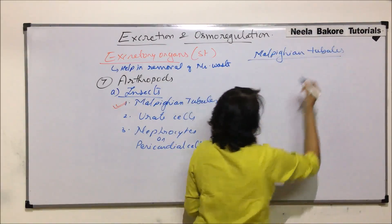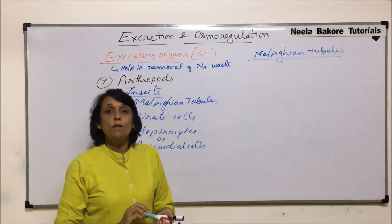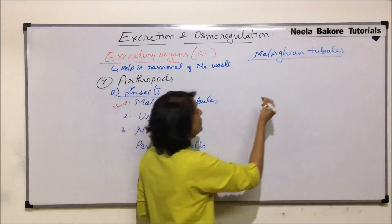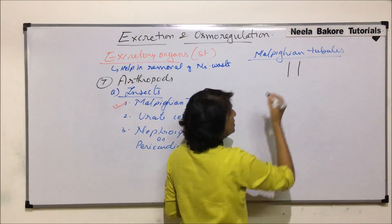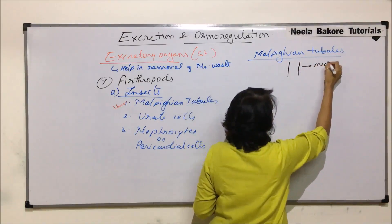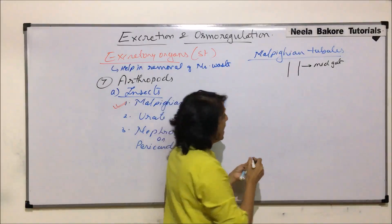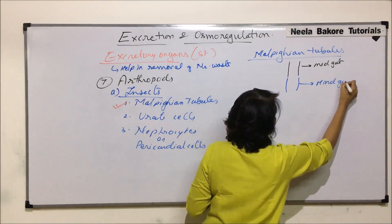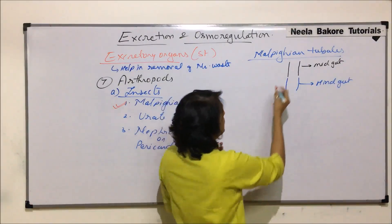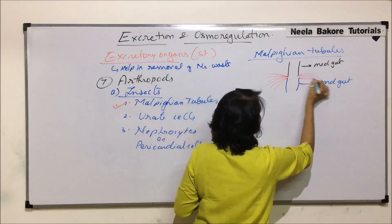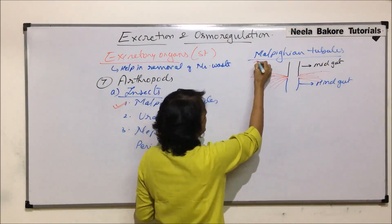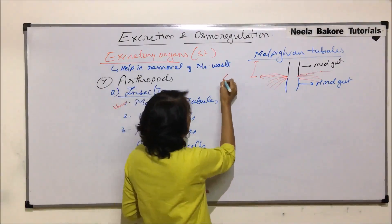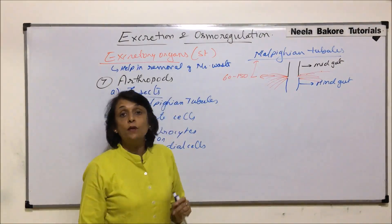Malpighian tubules are named after the scientist Marcello Malpighi. These are small finger-like structures present at the junction of the midgut and hindgut. So if this is the alimentary canal — this is the midgut, and from here starts the hindgut — at the junction of these two, these finger-like structures are present. Their number normally varies from 60 to 150.